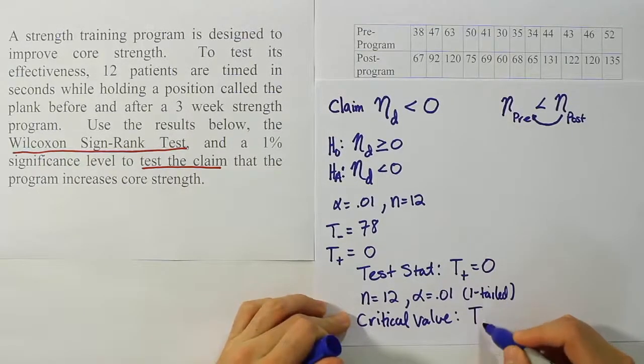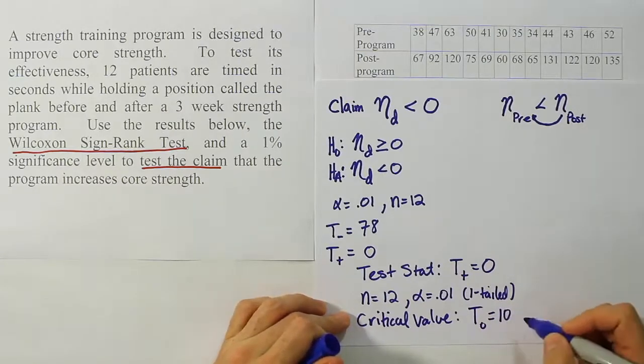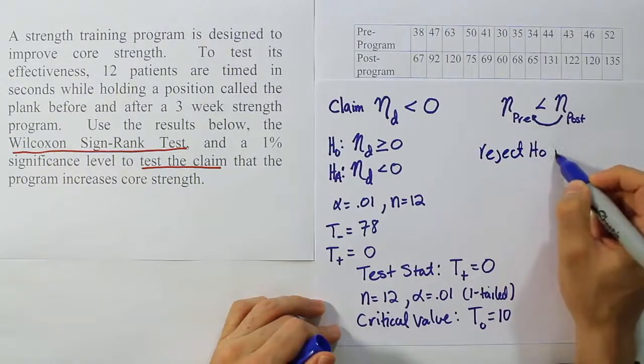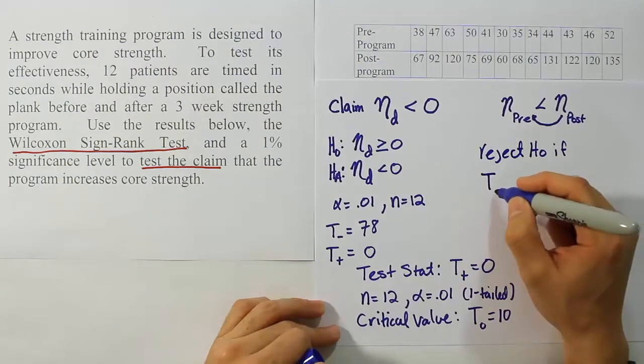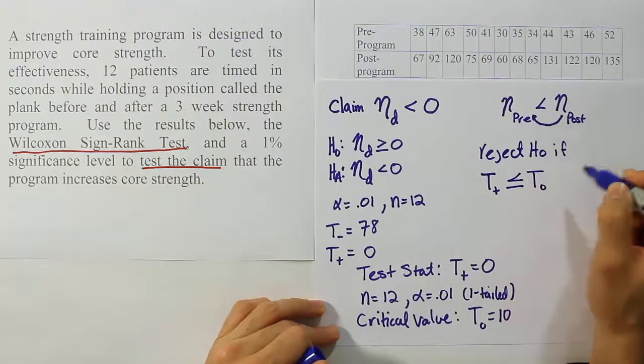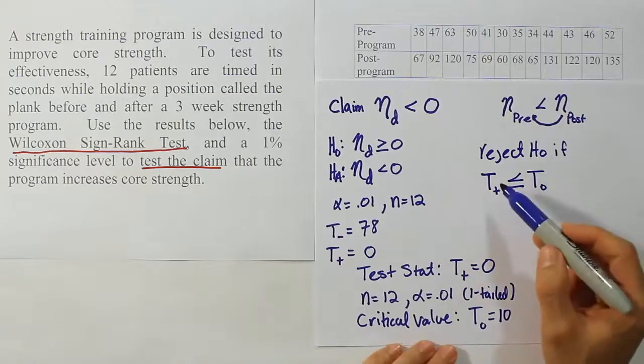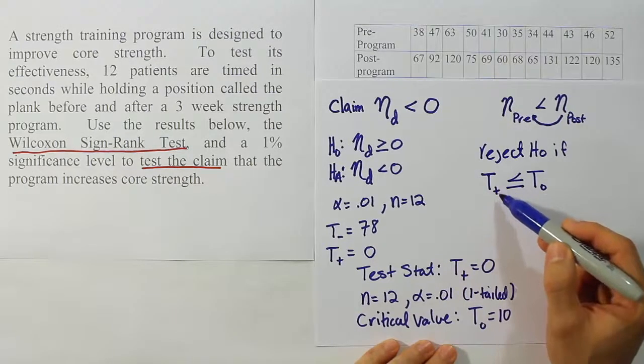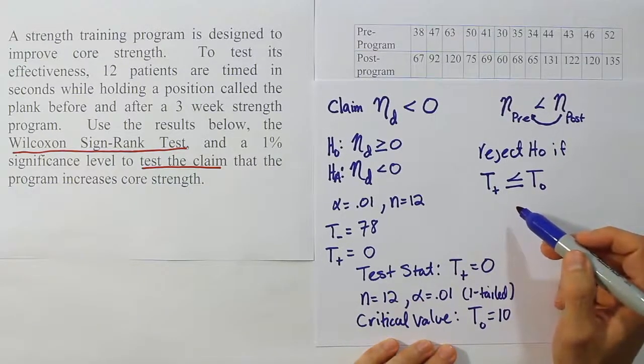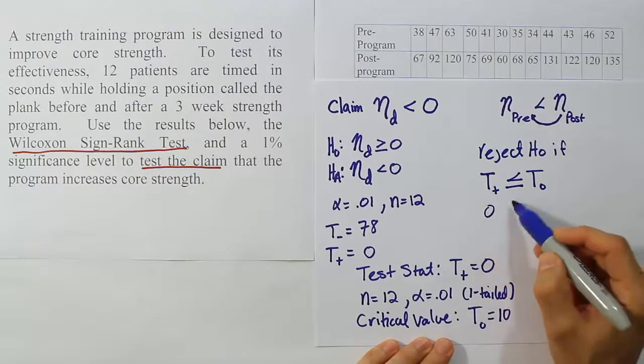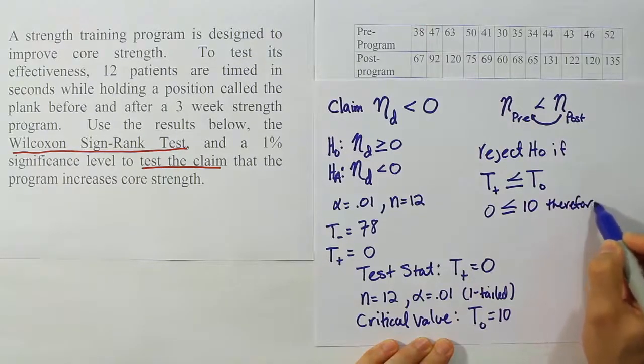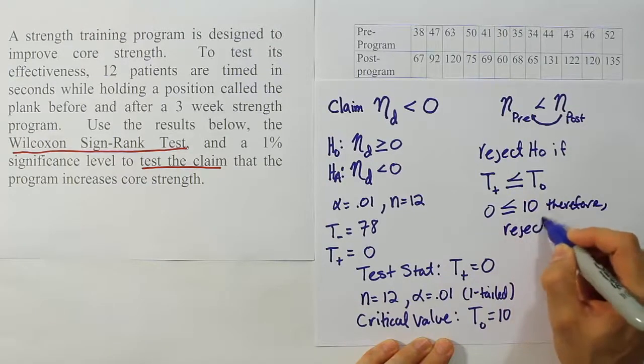Okay, so our critical value T0 is equal to 10. Let's talk about the rejection region. We're going to reject H0 if T, in this case, T positive, but in general, our test statistic is less than or equal to T0. So in this case, this is how the problem is going to work. For our particular scenario, we're going to see if T positive, the rank total for the positive differences, is less than or equal to T0. If it is, we're going to reject H0. And of course, when we do this, we see that the T positive is zero, which is less than or equal to 10. So that means we're going to therefore reject H0.